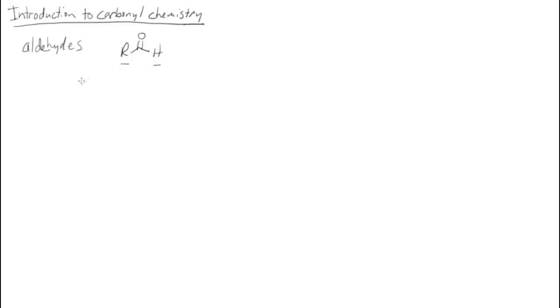We can have aldehydes, which have a generic structure with a carbonyl in the middle, a hydrogen on one side and an R group, or some kind of carbon group, on the other. We have ketones, which have R groups on both sides of the carbonyl. Sometimes they're written as R and R prime to indicate these two groups don't have to be the same — ketones can be symmetrical, but they don't have to be.